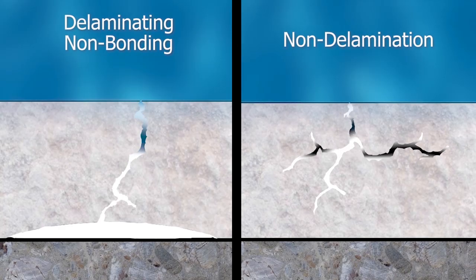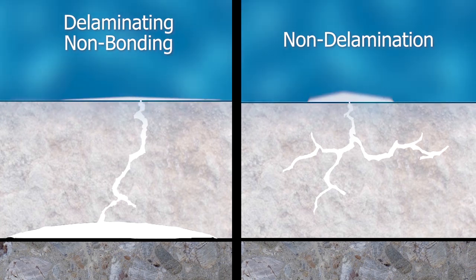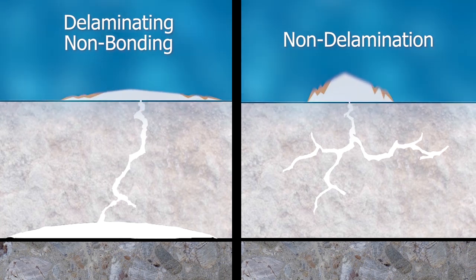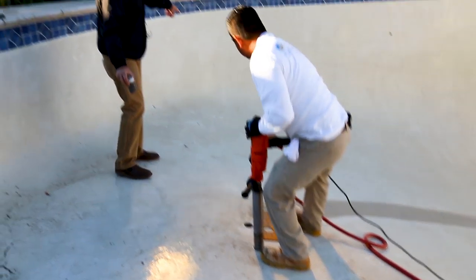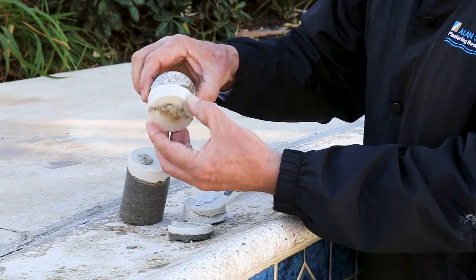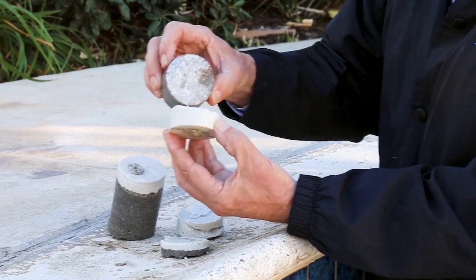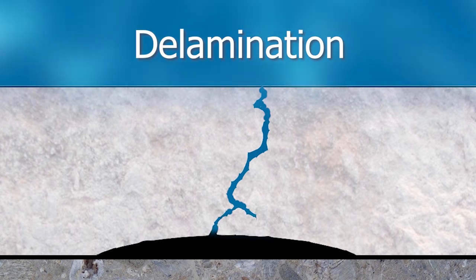Let's define the two basic different types of calcium nodules that we see in the field that have plagued the pool finish industry for years. The first nodule we'll talk about is also known as delaminating or non-bonding areas. Delamination means that a gap is caused by the base of the plaster being separated from the substrate it was originally applied to.